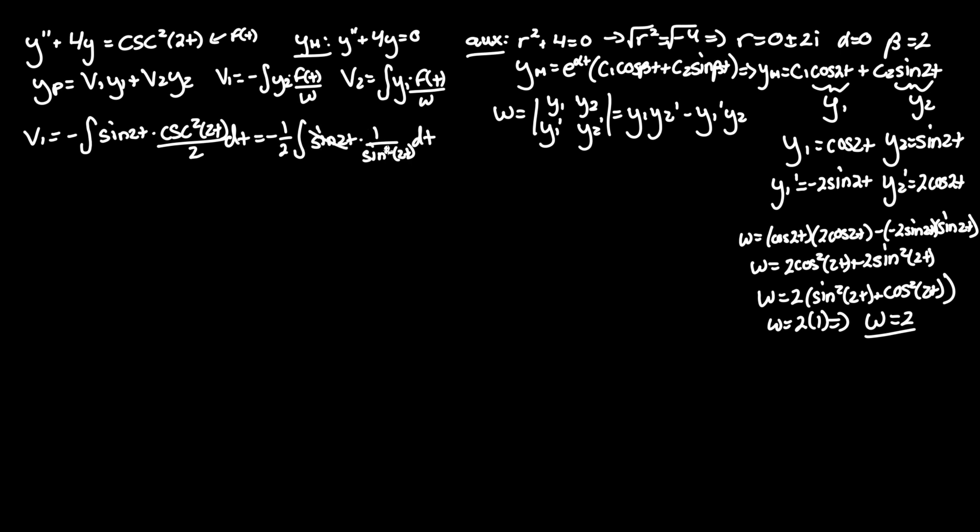We can cancel one sine term out of here, but that still leaves us with one cosecant term. So v1 equals negative 1 half integral of cosecant 2t dt.